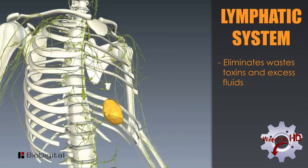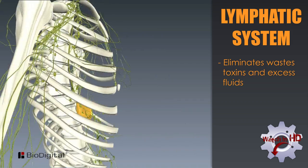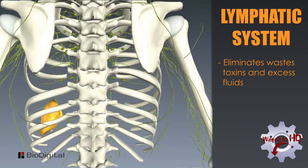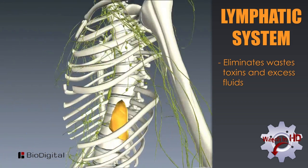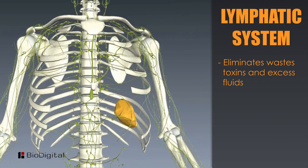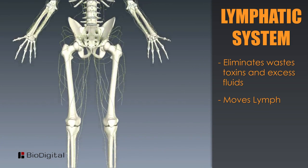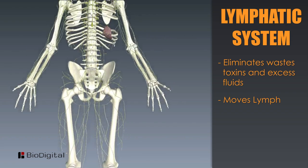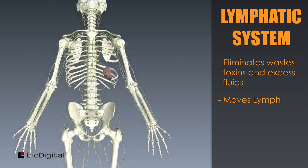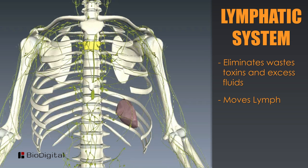The purpose of the lymphatic system is to eliminate waste or toxins and excess fluids from the body within its own structures. The lymphatic system follows along the circulatory system of blood vessels to move lymph, which is a thin watery fluid. The lymphatic system is an integral component of the immune system. Together, these two systems work to protect the body by eliminating and or destroying toxins.